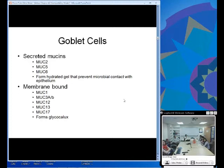The goblet cells' main job is to secrete mucin. They can either be secreted or membrane-bound. The secreted mucin forms a hydrated gel that prevents microbial contact with the epithelium, and membrane-bound mucins form a glycocalyx. Both are part of the innate immune system preventing microbial contact with the GI tract.